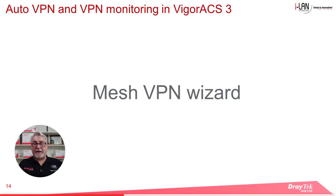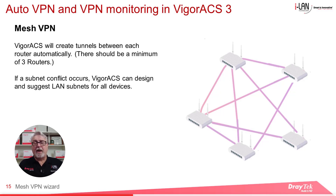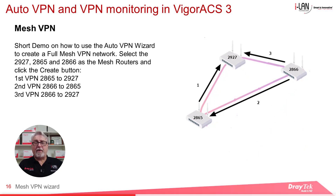Moving on to SD-WAN VPN types — the first is a Mesh VPN. The mesh scenario is fairly complex and requires at least three routers. It creates multiple tunnels across routers and can change VPN links if a tunnel drops out. The mesh scenario is ideal for large organisations with several central sites where redundancy is required. The SD-WAN AutoVPN wizard makes the process simple, and if a subnet conflict occurs, ACS3 can design and suggest LAN subnets for all devices to resolve it.